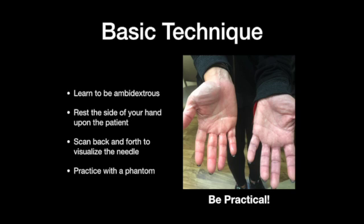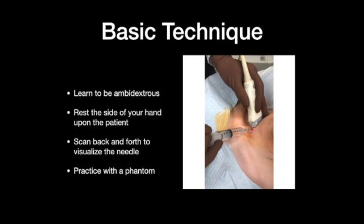Some tips for your scanning: my advice is to become ambidextrous. When you're dealing with laterality of a procedure, you want to be able to scan one side or the other, getting used to using both hands for the injection or holding the needle or probe. If you're new to this, start right away so you'll learn as you go. You also want to scan back and forth over the patient to find the target. Practice with a phantom. Notice in this picture that my fingers are resting on the patient's tissue on the neck, helping to stabilize the probe so it doesn't slip. My index finger and thumb hold the probe while my other fingers stabilize it against the patient's skin.